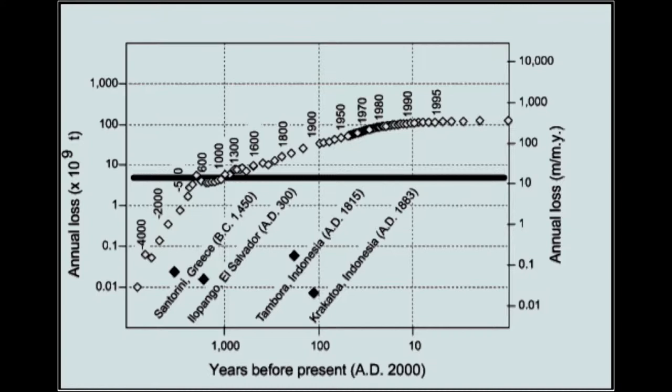Thus, in this Unit 6, when we consider biotic effects on the critical zone, we cannot ignore humanity. Throughout the semester, you've been exposed to various topics associated with human degradation of the critical zone. In lesson 12, you will focus on this topic to provide some context. In Unit 6, we will consider topics of biodiversity and ecological processes, and ways in which landscape-scale characterization of biotic attributes may be considered.